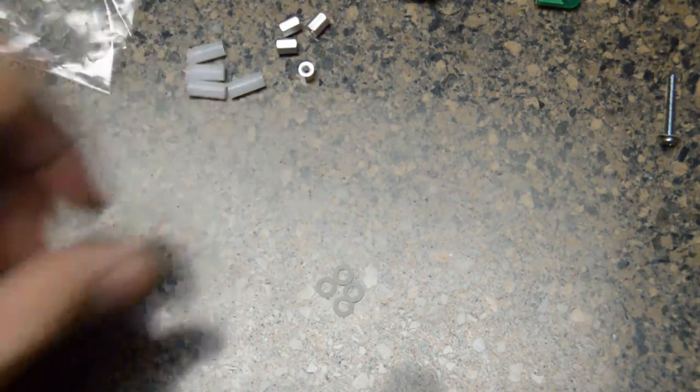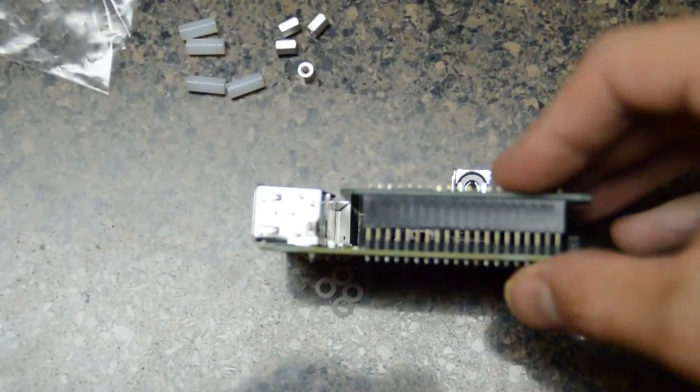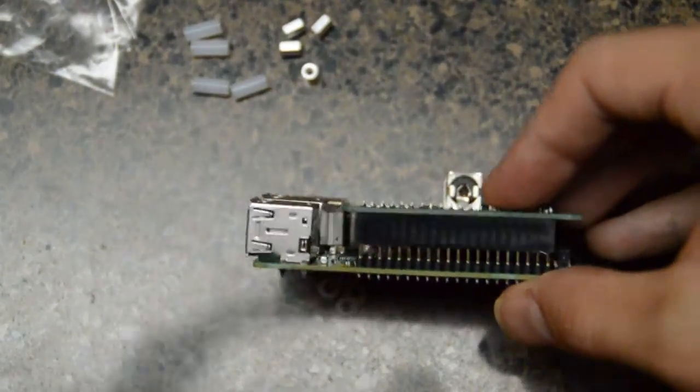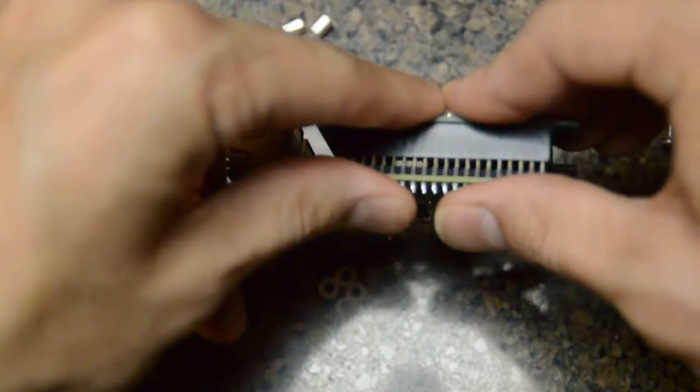So first things first, you want to carefully plug in the Pi DAC into the Raspberry Pi. Make sure you got them all lined up before you push down.